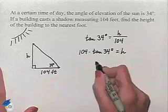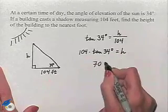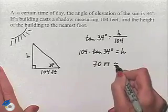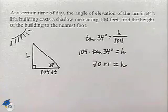Now, using a calculator, we come up with an approximate value for H of 70, so our height is approximately 70 feet.